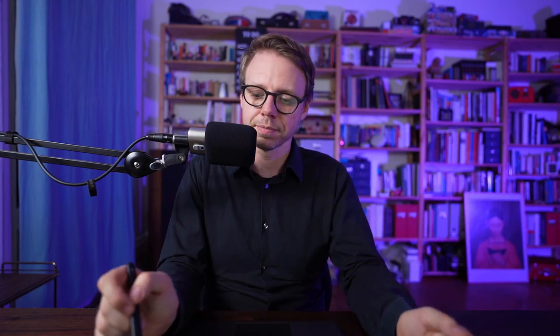So in the input we have our red, green and blue channels, and in our hidden layers we also call these channels feature maps because they take the features and using the filter these features are mapped to the next layer.